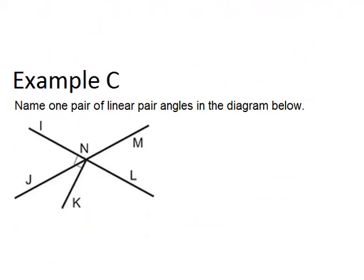Finally, let's look at the last example, example C. Name one pair of linear pair angles in the diagram below. So to do this, you should be looking for a straight line that's been divided into two parts. So for example, you could look at this line that's been divided right here.